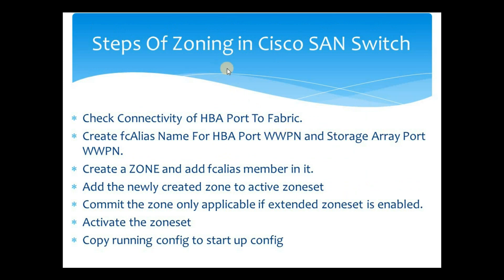Let's discuss the overall steps of zoning in Cisco MDS SAN switch. First, we check the connectivity of the HBA port to the fabric — we will discuss how to do this via command line. Second, we create FC alias names for the HBA port WWPN and storage array port WWPN. If the FC alias is already created, you can skip this step. Third, we create a zone and add FC alias members — which are the FC aliases created for the HBA port WWPN and storage array port WWPN.